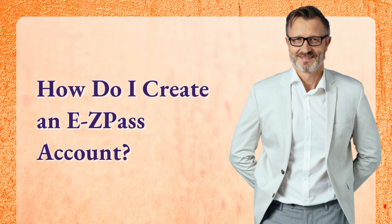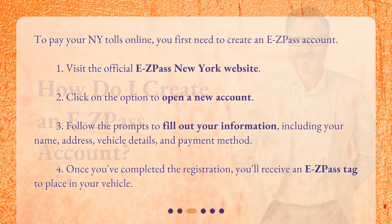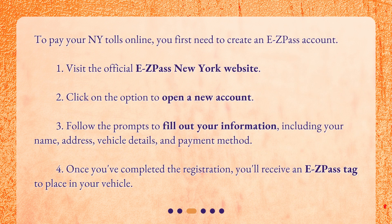How do I create an EZPass account? To pay your NY tolls online, you first need to create an EZPass account. Visit the official EZPass New York website. Click on the option to open a new account. Follow the prompts to fill out your information, including your name, address, vehicle details, and payment method. Once you've completed the registration, you'll receive an EZPass tag to place in your vehicle.